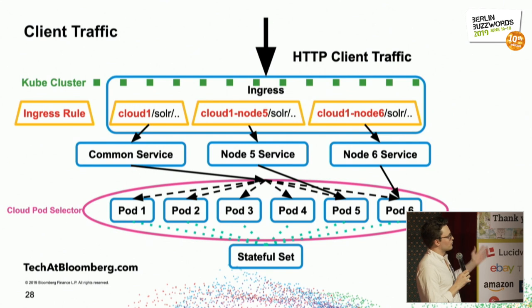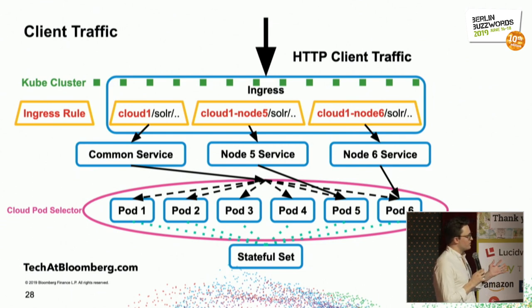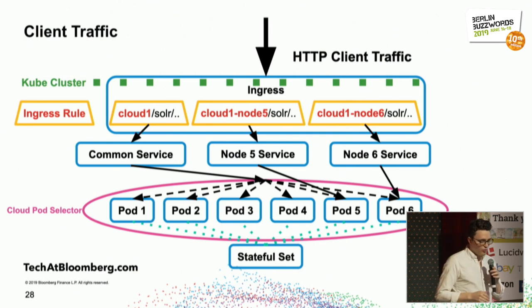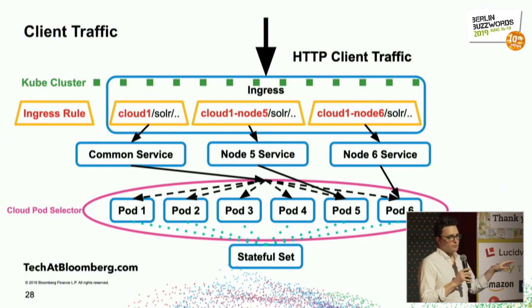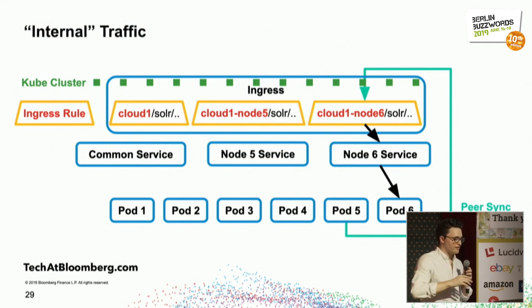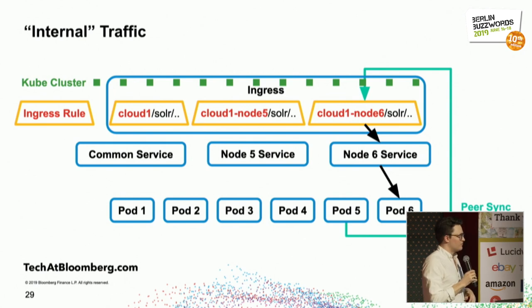As you can see here, we have our Solr cloud running with client traffic hitting it from outside through an ingress. These ingress rules map to different node services. We have one common service that routes to all pods in our Solr cloud, and then individual services that map requests to individual pods. Once we're using individual node services, the pods themselves can use the same client request path to address other nodes. So pod five, when doing peer sync with pod six, goes out to the ingress and has that request routed down to the service and back to pod six. This lets us run Solr across multiple Kubernetes clusters seamlessly.